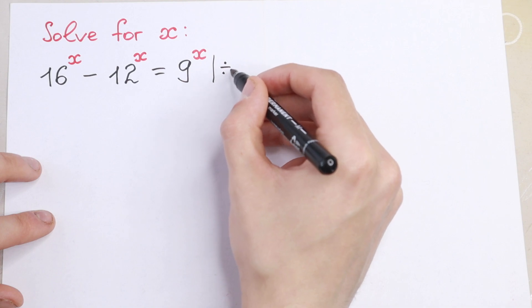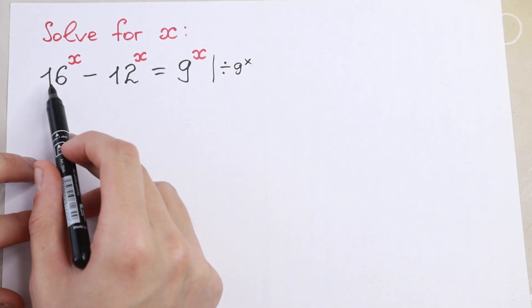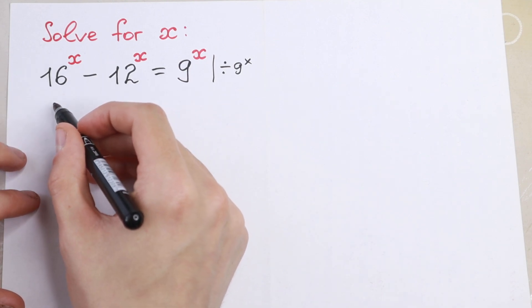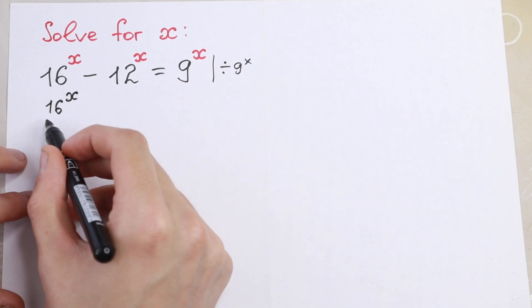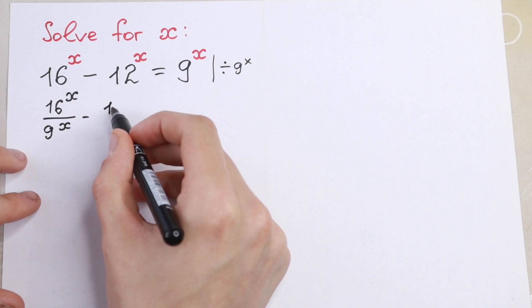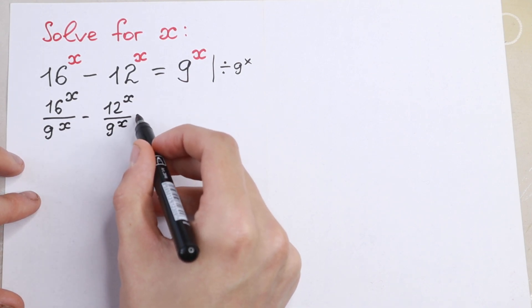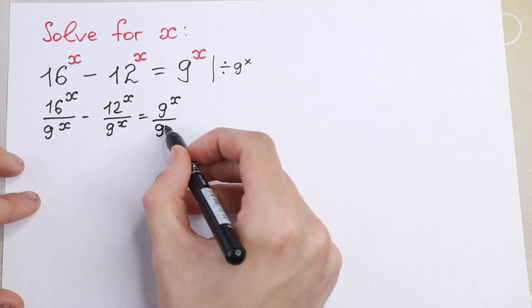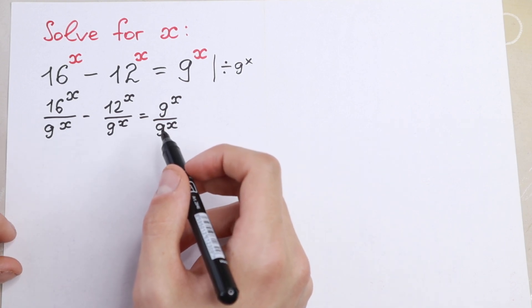So we divide both sides by 9 to the power x. We need to divide all elements by this 9 to the power x. So we will have 16 to the power x dividing by 9 to the power x, minus 12 to the power x dividing by 9 to the power x, and 9 to the power x dividing by 9 to the power x.